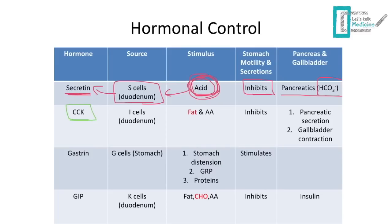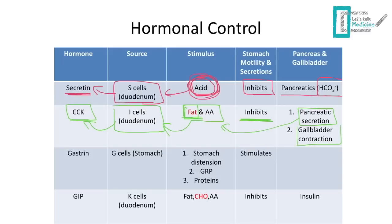Our second hormone is cholecystokinin, or CCK, which also comes from the I cells of the duodenum. It's stimulated by fat or amino acids, but mostly fat. When stomach content containing fat enters the duodenum, it tells the I cells to secrete CCK. CCK inhibits stomach motility and secretion just like secretin, tells the pancreas to release all its secretions like lipase and colipase, causes the gallbladder to contract and release its content, and tells the sphincter of Oddi to relax so gallbladder content can reach the duodenum. A very important point: CCK is the most important hormone for regulation of pancreatic secretions.